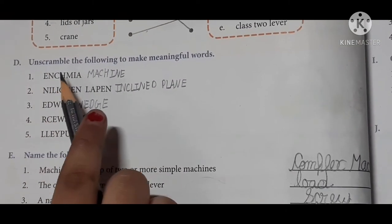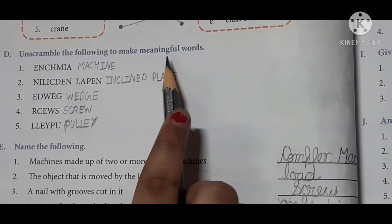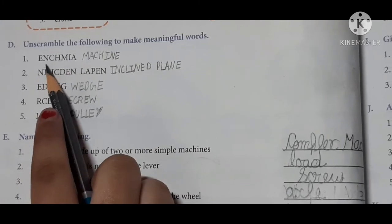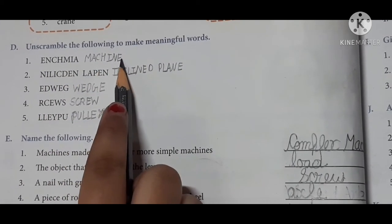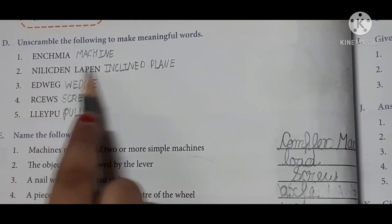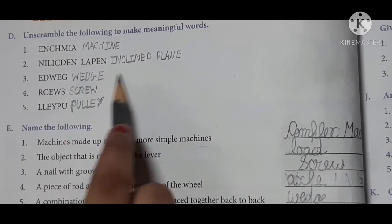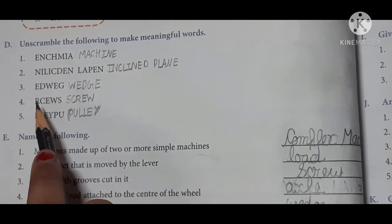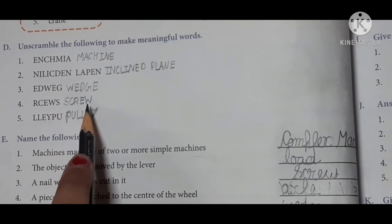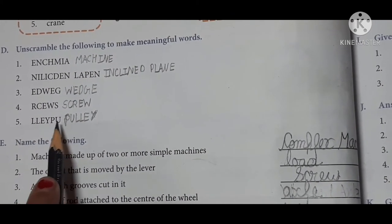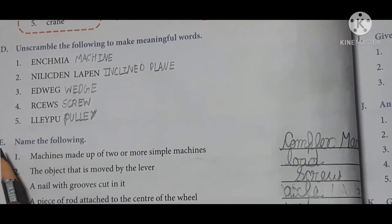Exercise D. Unscramble the following to make meaningful words. First is machine. Second is inclined plane. Third is wedge. Fourth is screw. Fifth is pulley. Exercise E.